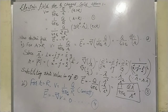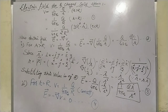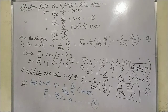As we know from our previous lecture, the potential V is equal to 1/(4πε₀) × q/R where R greater than capital R. Second case, when R is equal to R: V = 1/(4πε₀) × q/R. Third case, when R less than R: V = 1/(4πε₀) × q/(2R) × (3R² − r²).